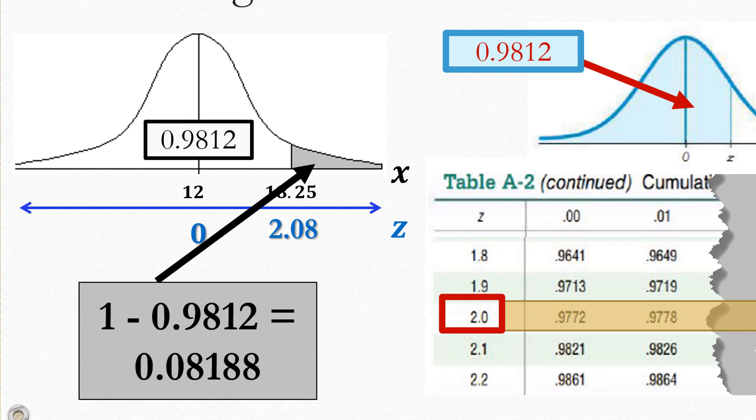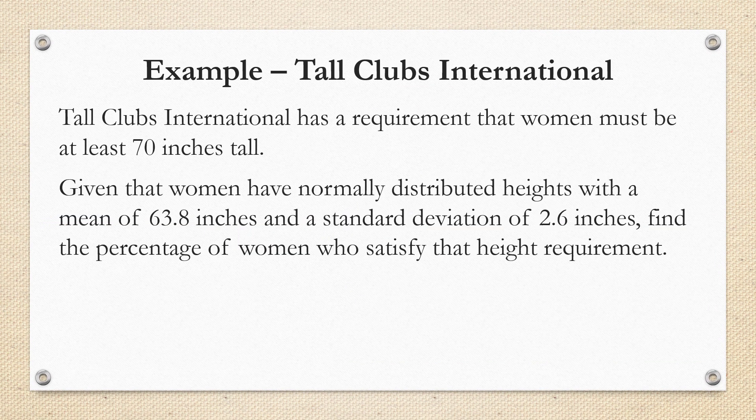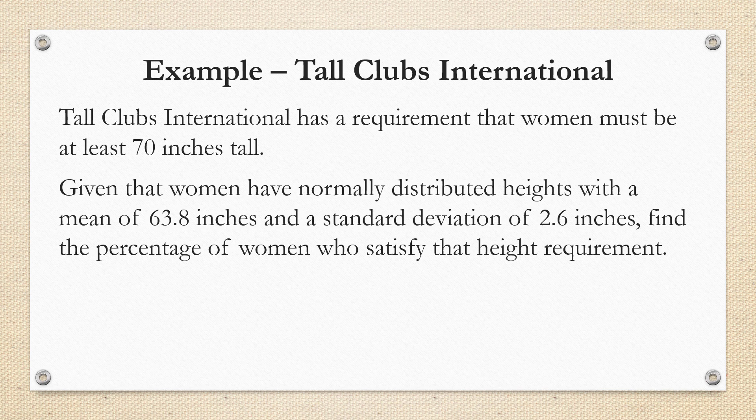And we can see that the area in gray is 0.0188. It's often the case when you're using a cumulative z-table that you're going to subtract from 1 because you want the area on the other side. So let's look at an application. Tall Clubs International has a requirement that women must be at least 70 inches tall. Given that women have normally distributed heights with a mean of 63.8 inches and a standard deviation of 2.6 inches, find the percentage of women who satisfy the height requirement.